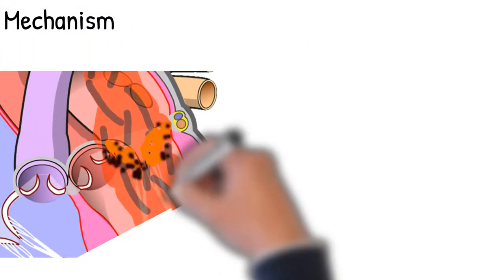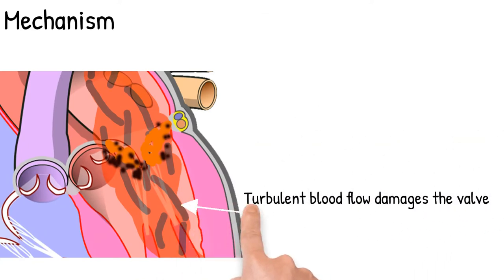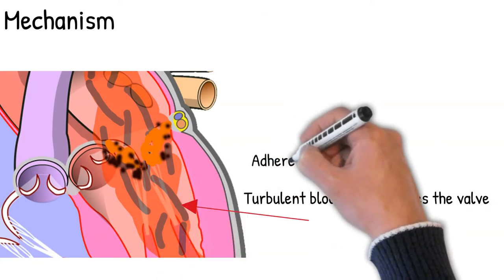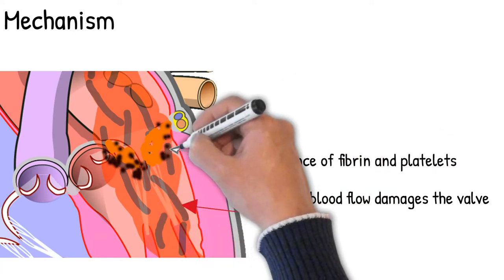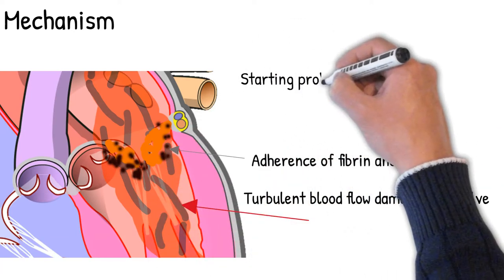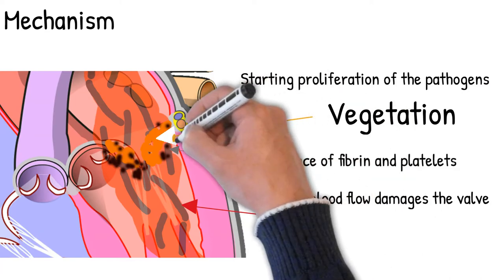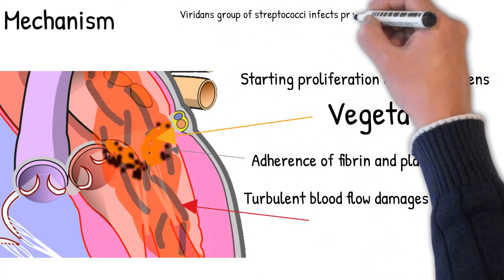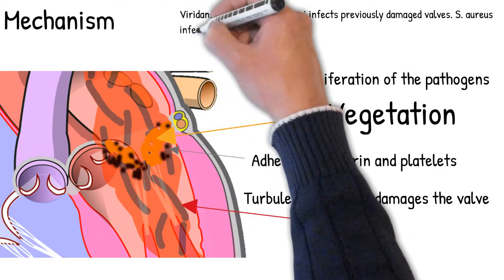Turbulent blood flow damages the valve, leading to adherence of fibrin and platelets to the areas of damage. Circulating bacteria or fungi are trapped, starting proliferation of the pathogens and laying down fibrin to encase the vegetation. The viridans group of streptococci infects previously damaged valves, whereas S. aureus infects normal or previously damaged valves.